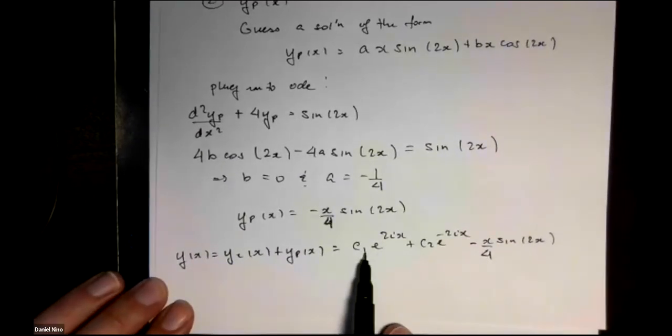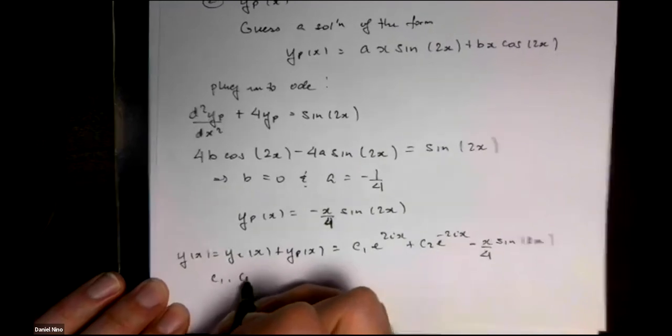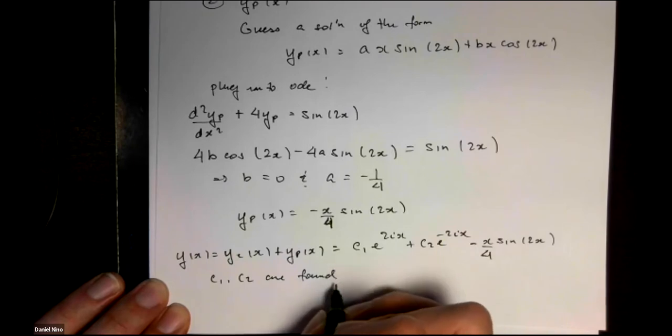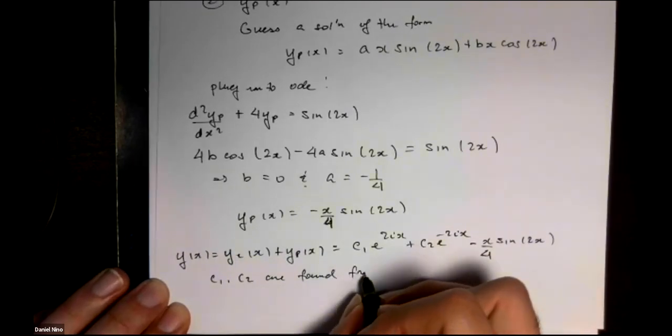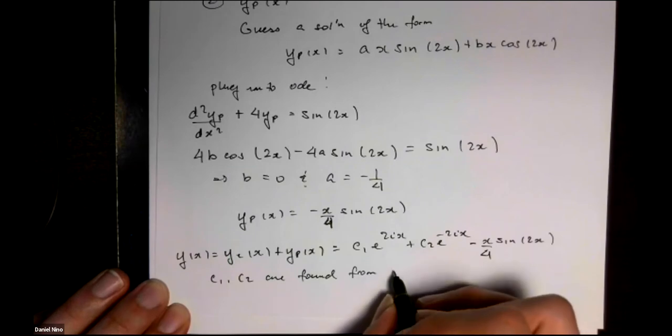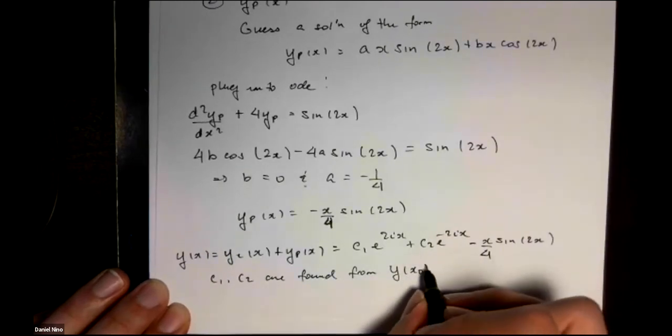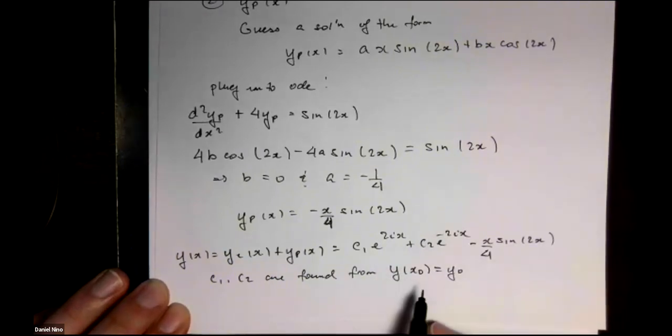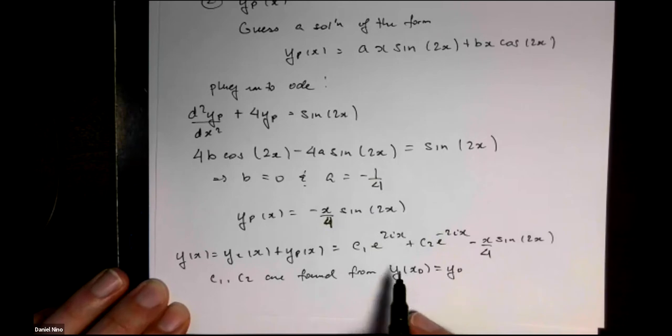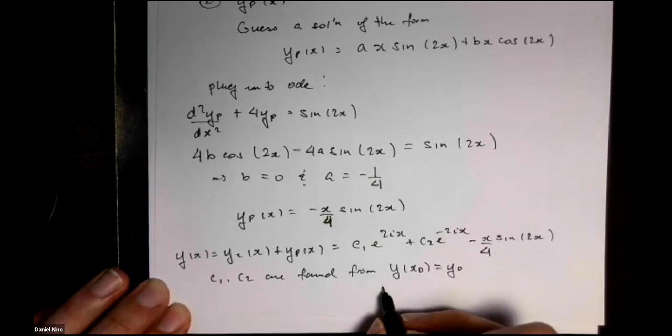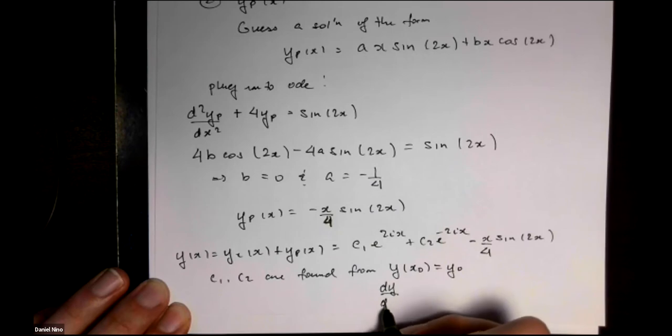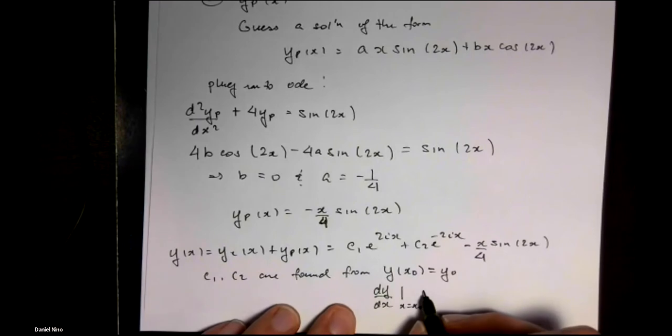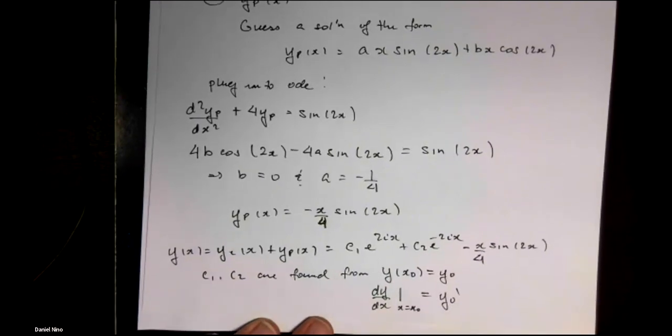C1 and C2 are just constants. These can be found by specifying specific conditions for y at some initial value of x. Because you have a second-order differential equation, you need two conditions. You also need a condition on the derivative of y evaluated at some initial value of x, which we call y naught prime.